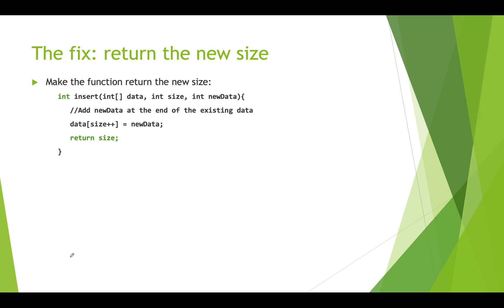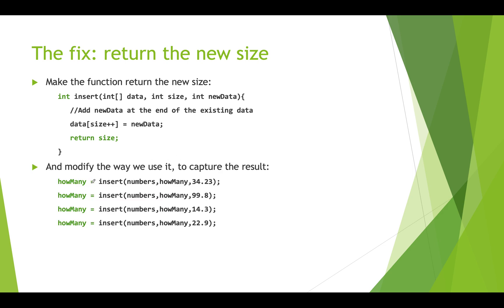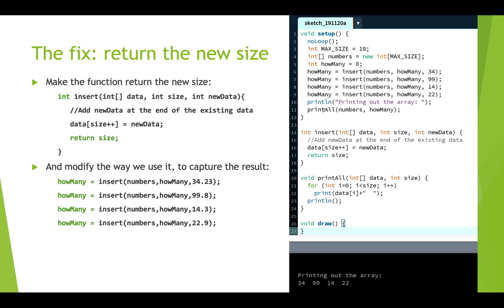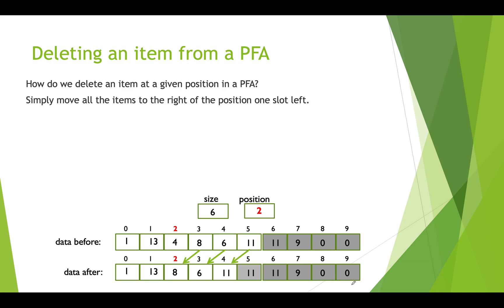The fix is to return the new size. We change insert from void to an int function and return size at the end, after it's been incremented. Then in the calling code we write: howMany = insert(array, howMany, newValue). This captures the updated value. Now howMany will be 4 after four inserts, and when we iterate to print, we correctly go from 0 up to but not including 4.